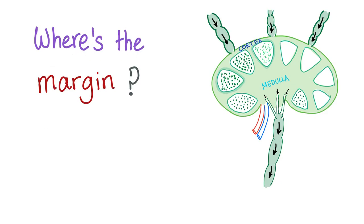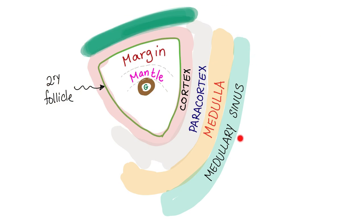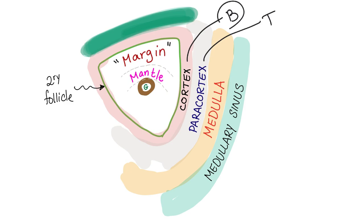In case you're wondering where the margin is, watch my previous video on lymph node anatomy. Here is the follicle of the lymph node. The lymph node has a cortex, then paracortex, medulla, and medullary sinuses. The cortex has three regions: the germinal center in the middle, the mantle, and the margin. Marginal zone lymphoma is located here, in the cortex. The cortex has B-cells, and the paracortex has T-cells — that's why marginal zone lymphoma is a B-cell lymphoma.